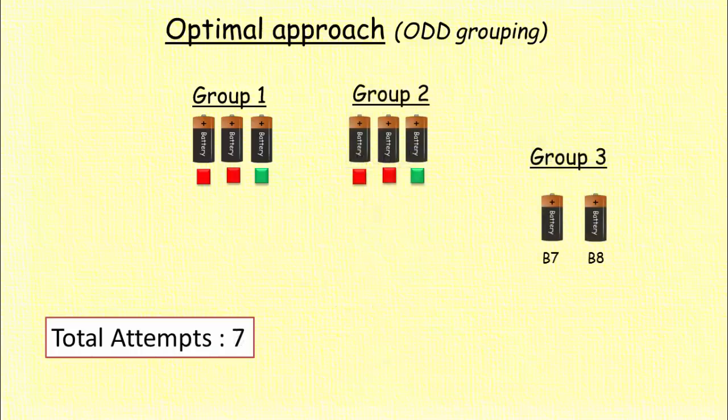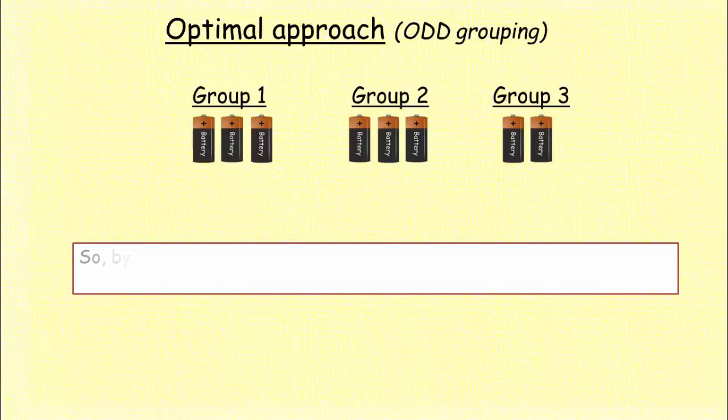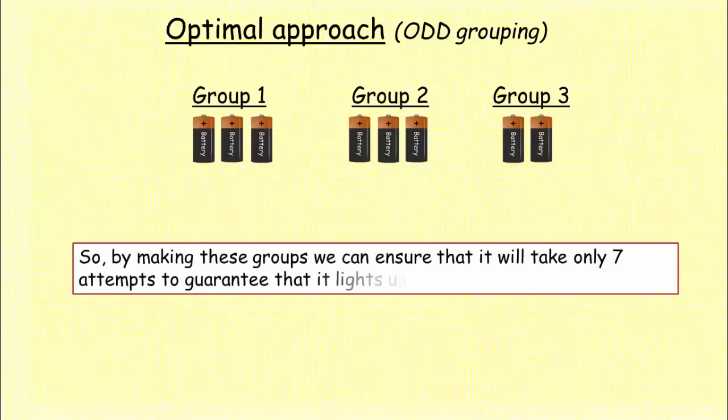Now we are left with only two batteries. And considering all previous worst cases, this pair of B7 and B8 must have both charged batteries which will ensure that it lights up the torch. So by making the groups with three, three, and two batteries we can ensure that it will take only seven attempts to guarantee that it lights up the torch.